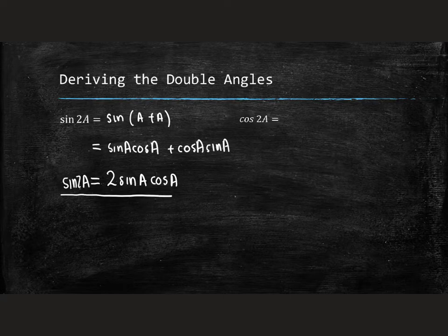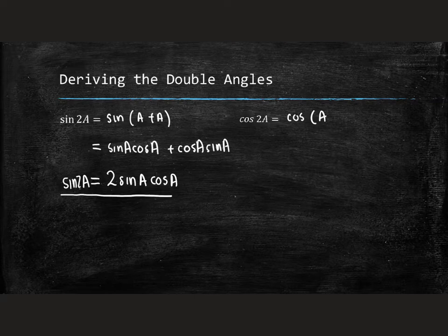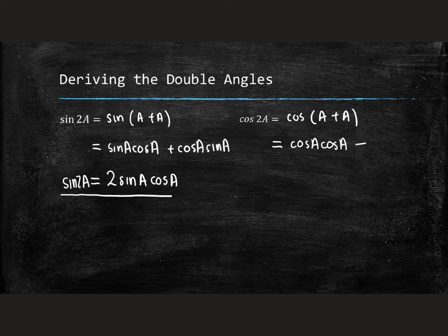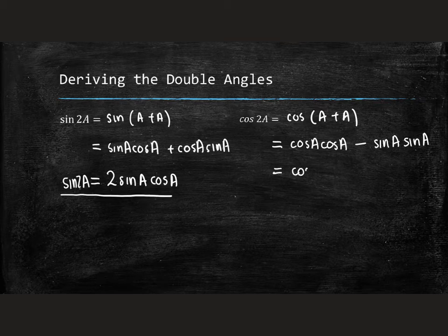It's the same thing for cos. It can be written as cos of a plus a. And the cos expansion is cos a cos a. We've got the different operator, sin a sin a. And I suppose what we see here then is we've got cos squared a minus sin squared a.